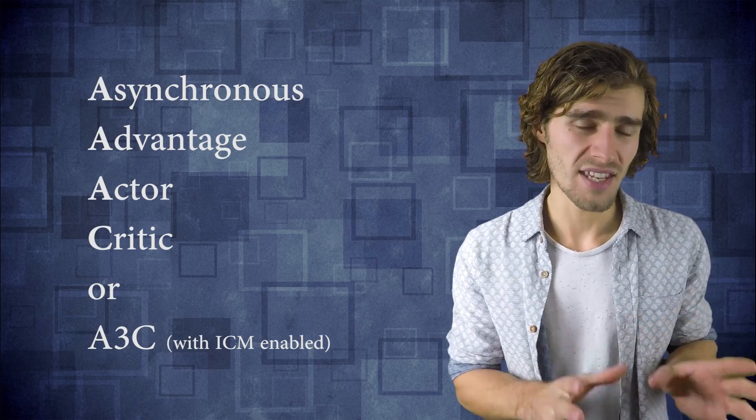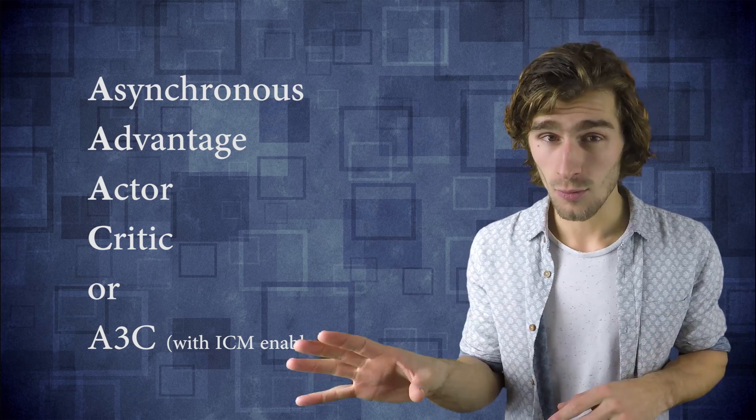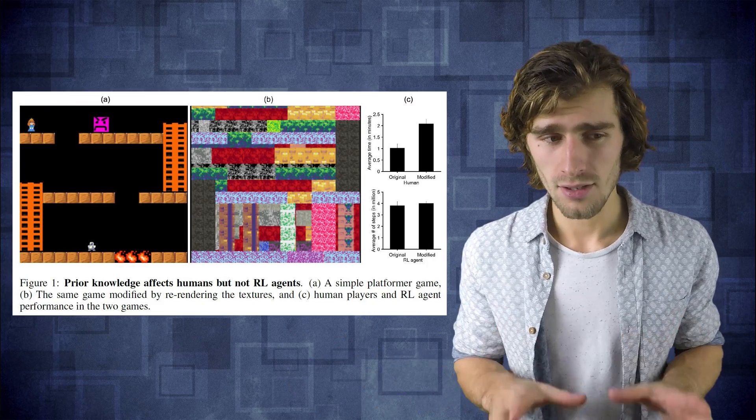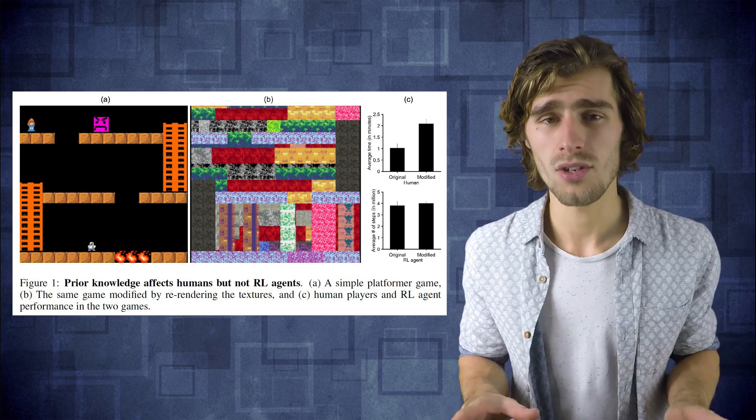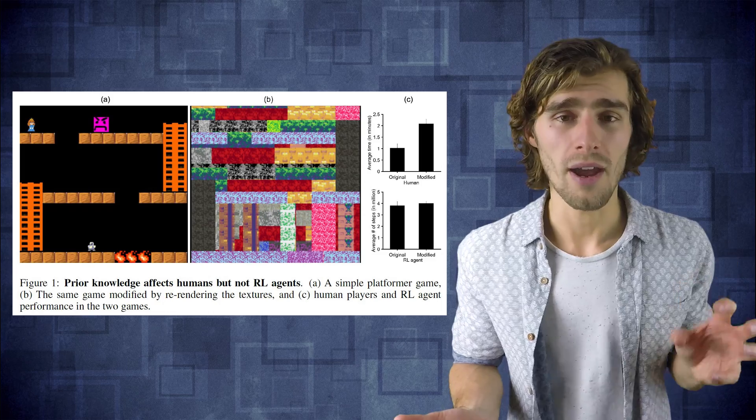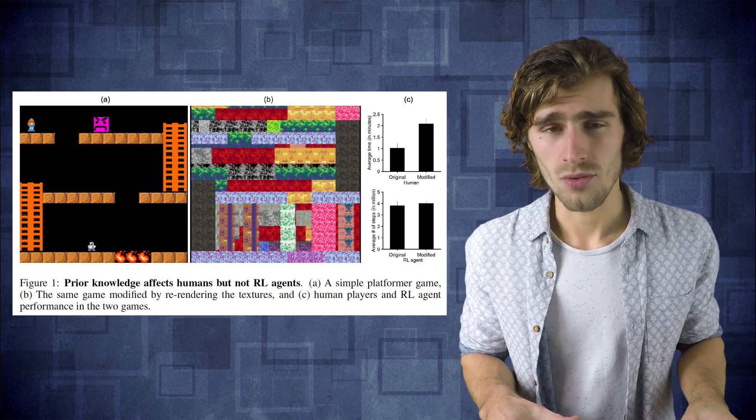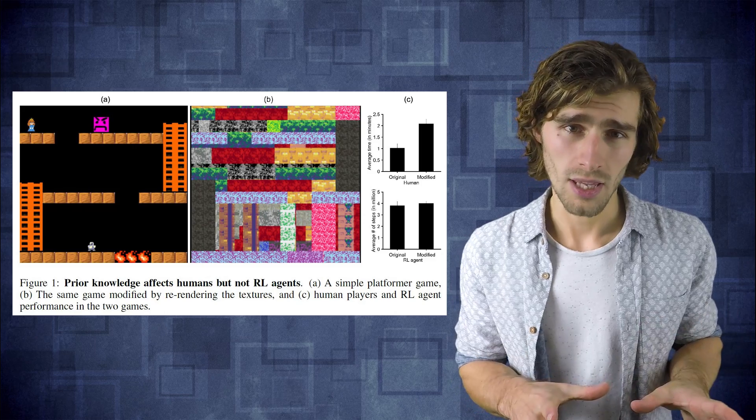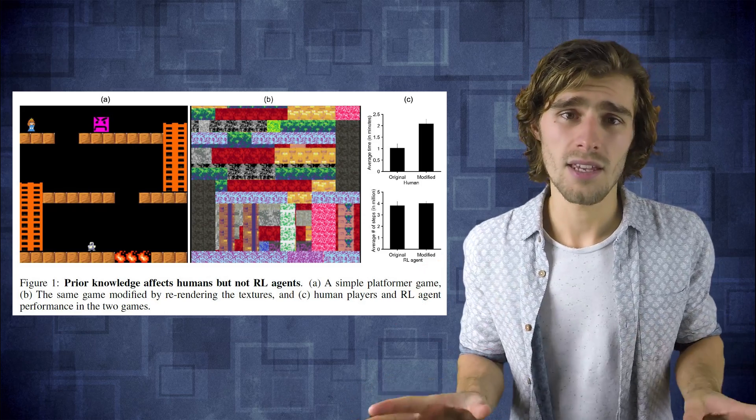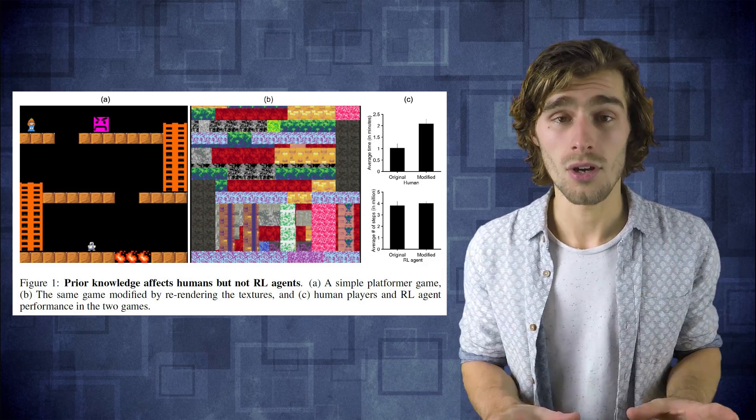Then the researchers did something really interesting. They used a state-of-the-art reinforcement learning algorithm called A3C to try and solve the same adjusted game versions that the human players had seen. It turns out that the reinforcement learning agents had no problem whatsoever with the adjusted versions where the priors were removed. Even in the game version where all of the object textures were remapped, the reinforcement learning agent needed about exactly the same amount of training frames in order to solve this level.